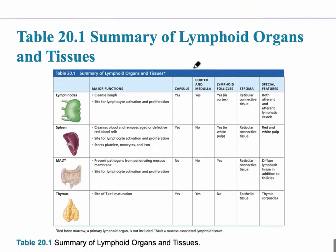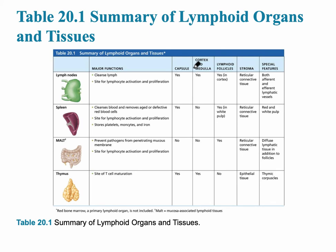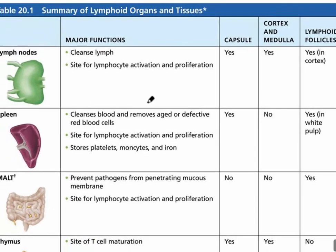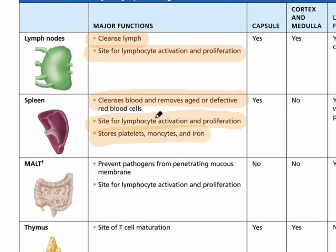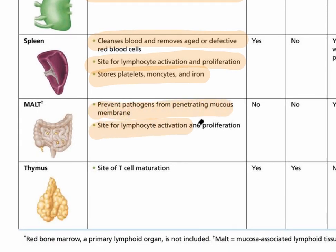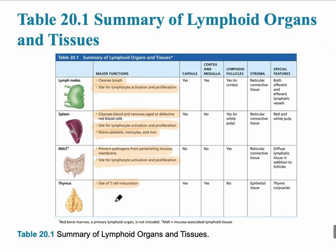In summary, the lymph nodes cleanse the lymph and are a site for lymphocyte activation and proliferation. The spleen is the largest lymphoid organ with a dual function: lymphoid activation and proliferation, and immune function. The thymus is the site of T cell maturation and is only large during childhood development, atrophying into adulthood. MALT provides immune protection at mucosal surfaces throughout the body.